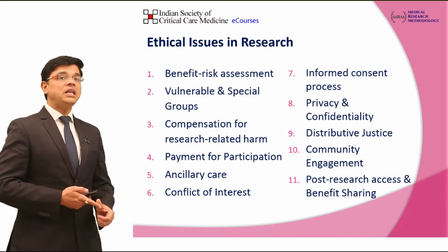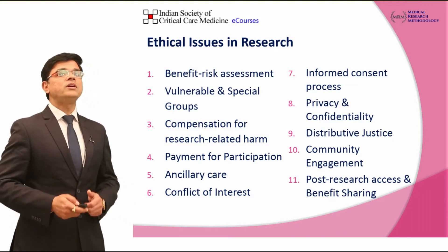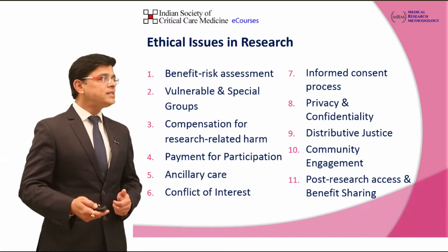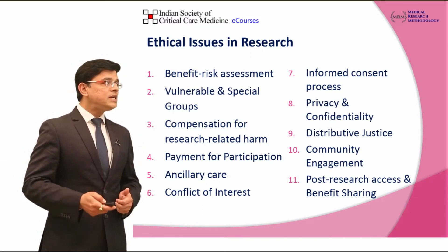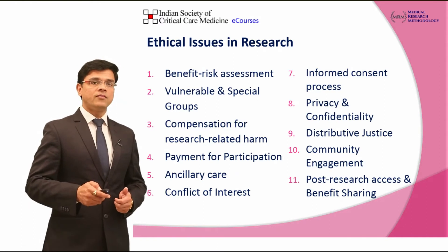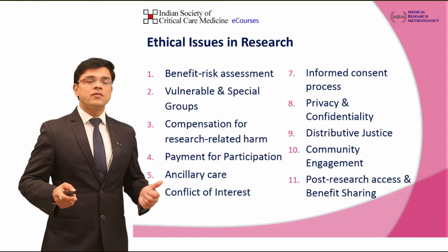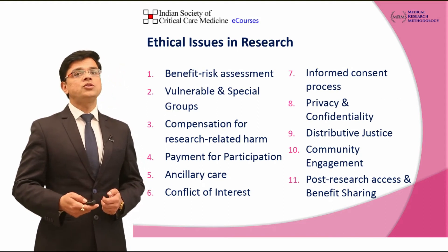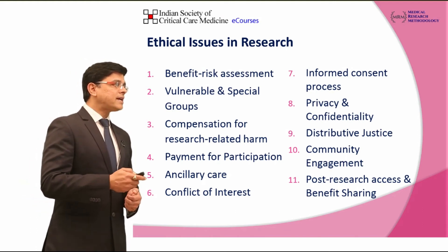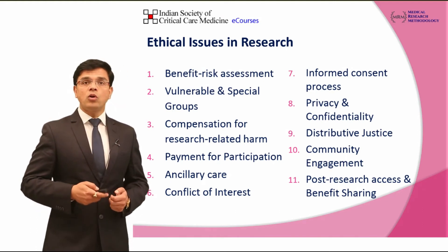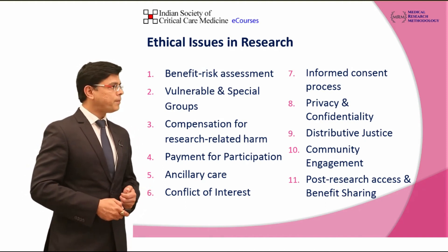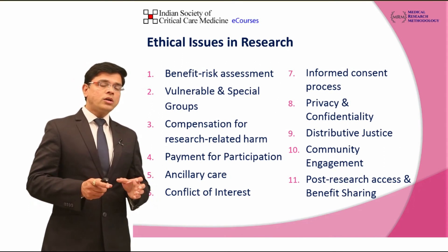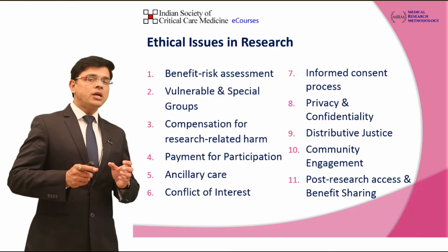Then what payment you are giving for the participation of individuals in the research. Ancillary care, whether it has been taken care of or not. What is the conflict of interest involved in this study. What is the informed consent process you are utilizing and how you are taking it. Then privacy and confidentiality of data which you are collecting. Distributive justice — whether all are getting benefit equally or not. Community engagement in community research is very important. Post-research access and benefit sharing is also looked into by the ethics committee. We will go one by one through all these points to better understand what these components are and how they work.